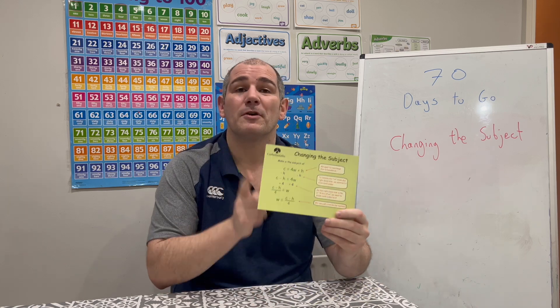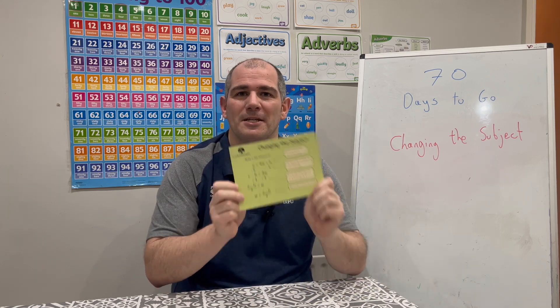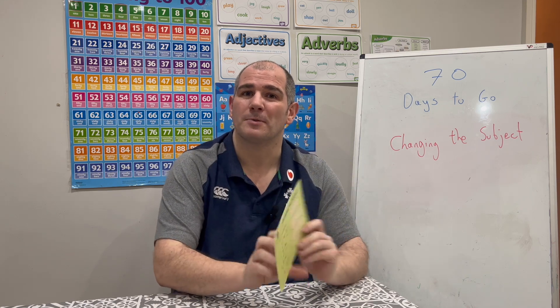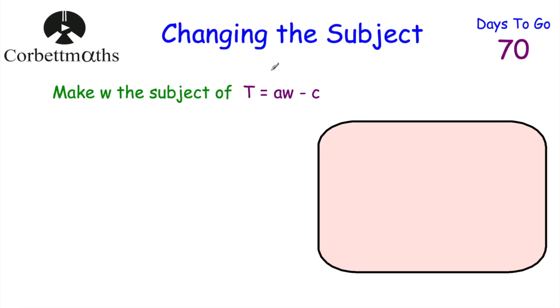Just a thing to remember: if you've got the revision card, card number 10 on changing the subject, it'd be really useful for you as well. So today we're going to be looking at changing the subject. Here's a typical question: make W the subject of T = AW − C. When we want to make something the subject, we want to get it on its own. At the minute T is the subject, but we want W to be the subject, so we want to get W on its own.